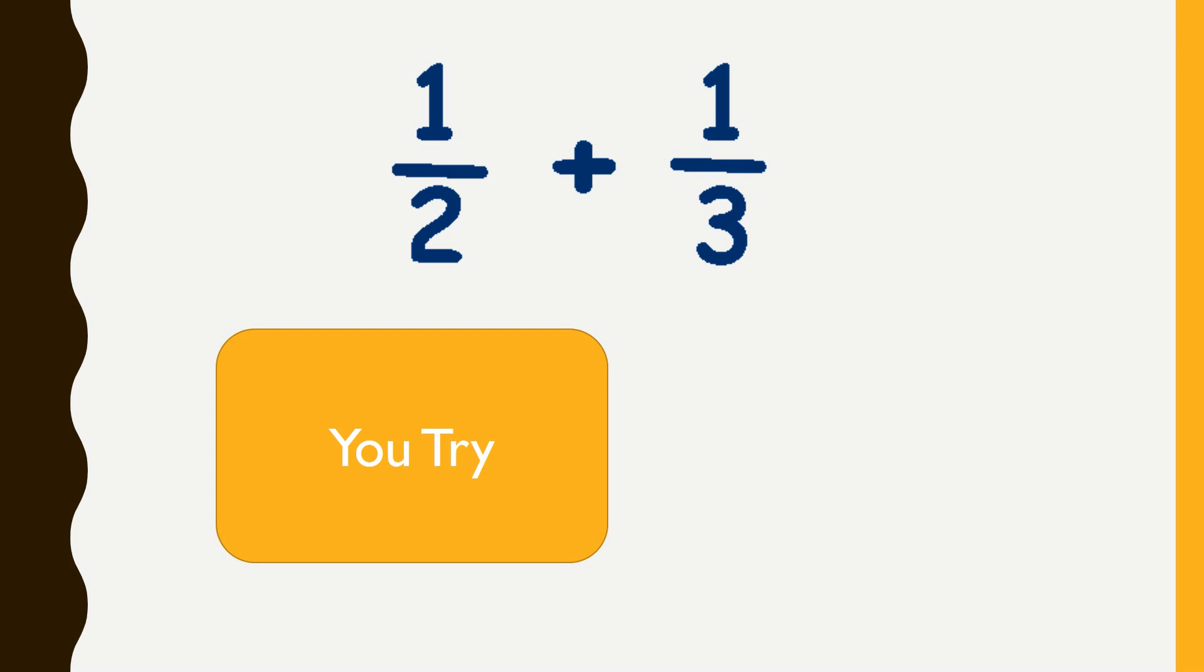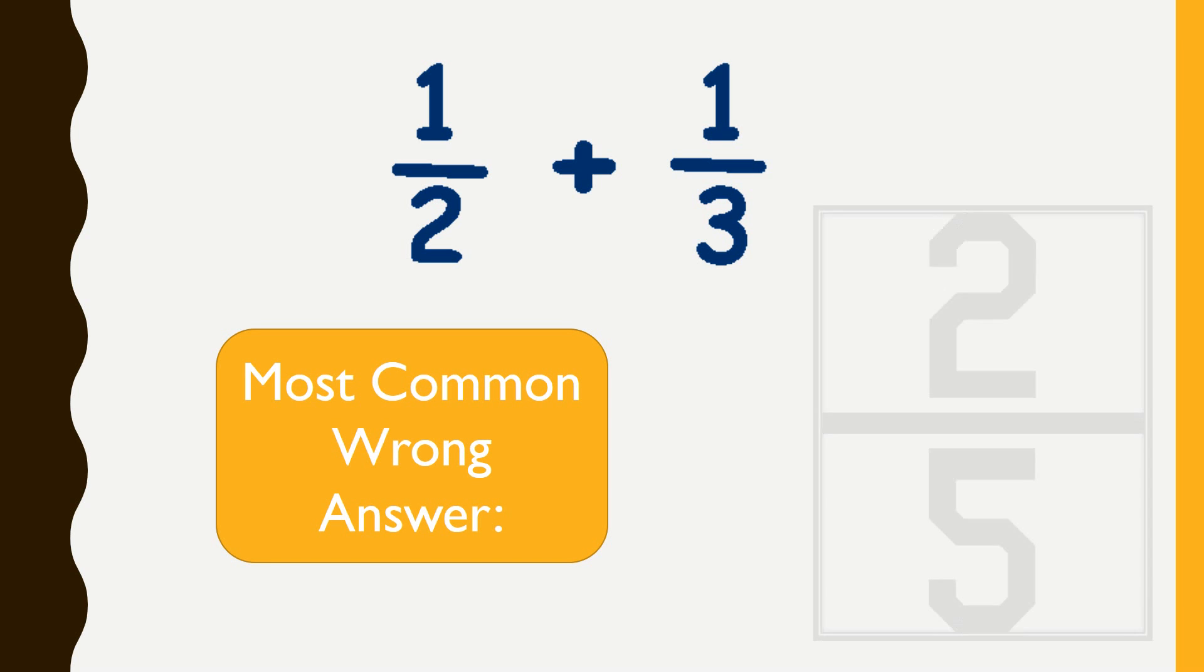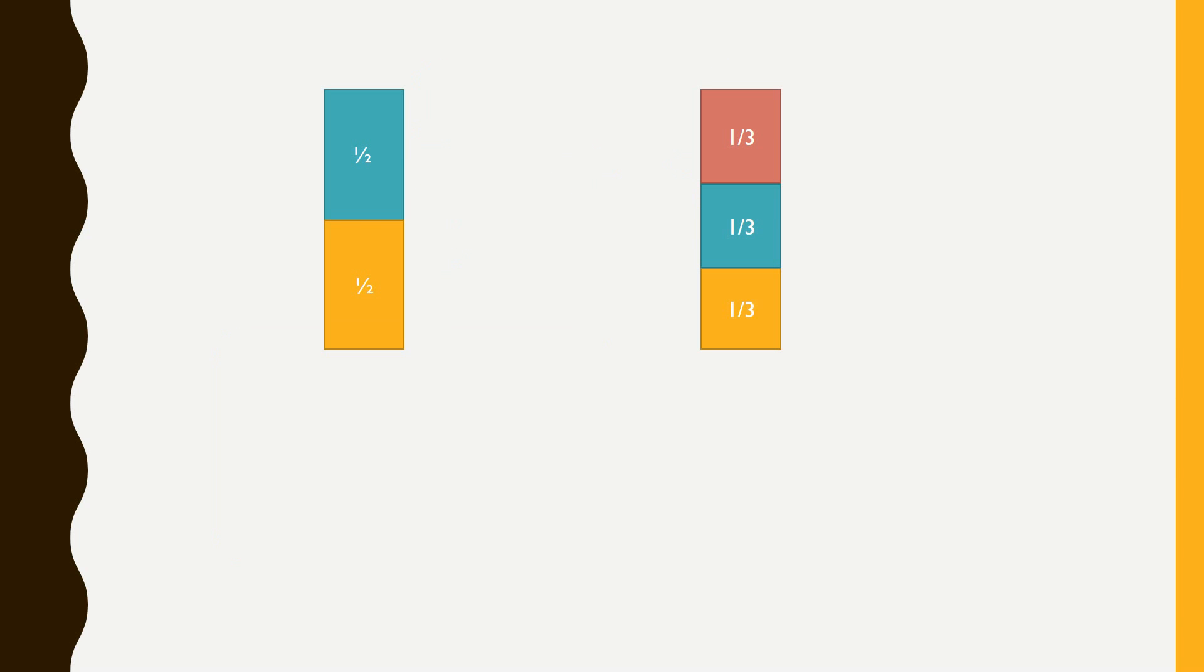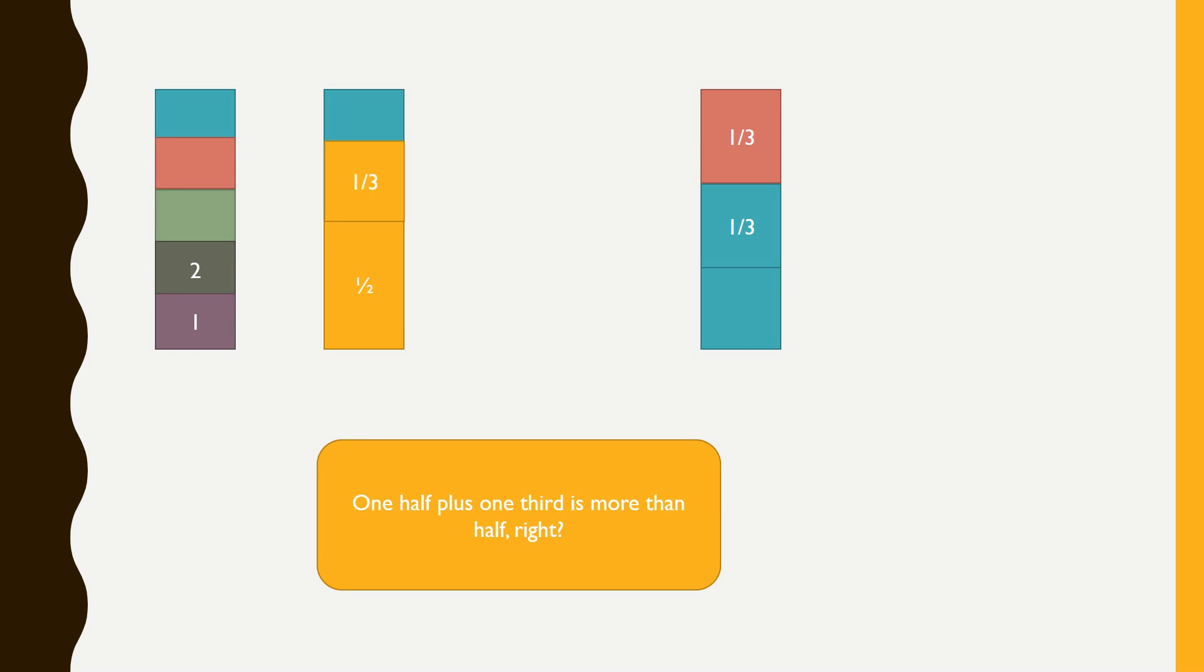So, try this. One half plus one third. The most common wrong answer is two fifths. Let's see why that's wrong. You see, if we started off with one half and we wanted to add one third, we would have more than a half, right? I mean, if we started with half and we're adding a positive number to it, we should end up with more than a half. So, let's take that same unit of one and break it into fifths. Two fifths is right here. Two fifths is less than half.